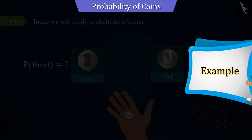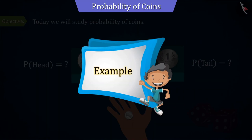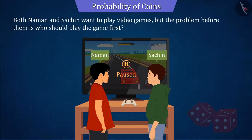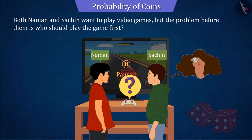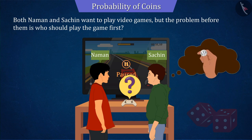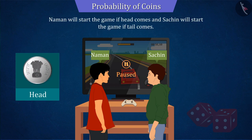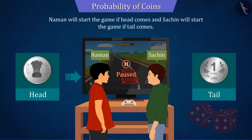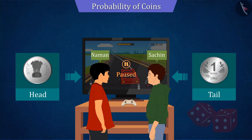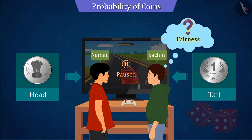Let's understand this with the help of an example. Both Naman and Sachin want to play video games, but the problem before them is who should play the game first. They decide to make this decision by tossing a coin, and decided that Naman will start the game if the outcome is head, and Sachin will start the game if the outcome is tail. But Sachin wants to know if doing so is a fair decision.